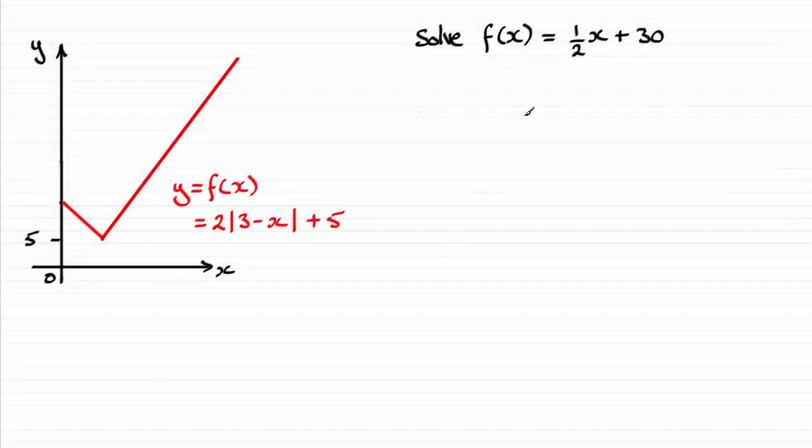OK, so for this part we've got to solve this equation f of x equals a half x plus 30. And when I'm doing something like this with a modulus equation it's always good to work off the graph. And so what I'm going to do is draw this graph, it's a straight line graph of a half x plus 30 on top of this one.